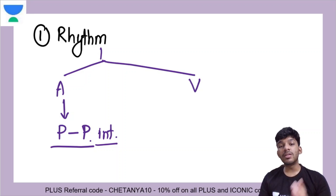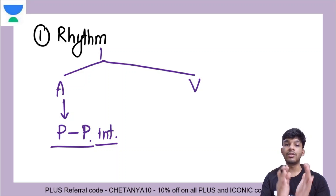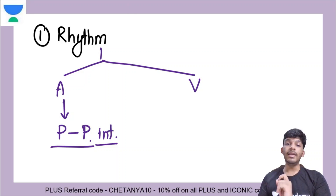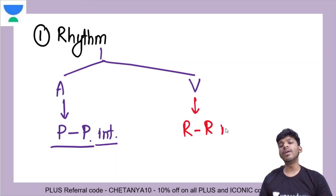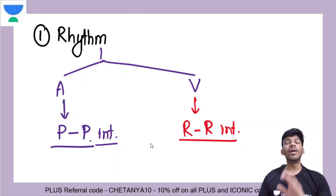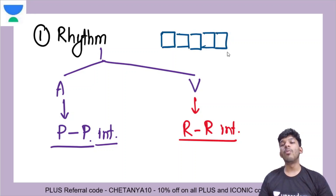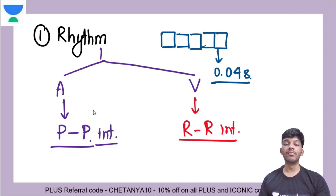If the PP intervals are at similar distances, that is called a regular rhythm; otherwise it will be an irregular rhythm. For ventricular rhythm, you will calculate the RR interval. One small box represents 0.04 seconds, which is helpful in calculating both the RR interval and the PP interval.